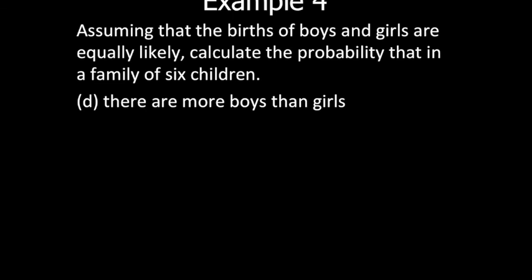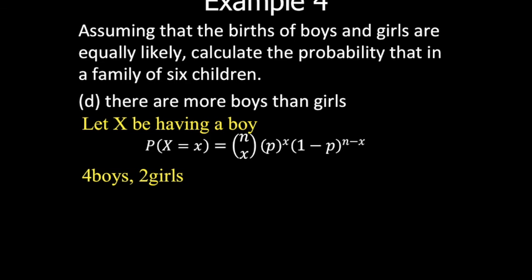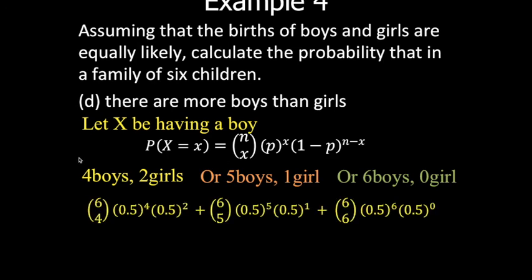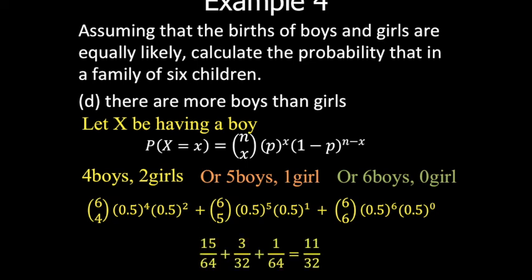For part (d), more boys than girls: cases are four boys and two girls (x=4), five boys and one girl (x=5), or six boys and zero girls (x=6) — we cannot have three boys and three girls. P(X=4) = C(6,4) × (0.5)^4 × (0.5)^2. P(X=5) = C(6,5) × (0.5)^5 × (0.5)^1. P(X=6) = C(6,6) × (0.5)^6 × (0.5)^0. The sum of these probabilities is 11/32.